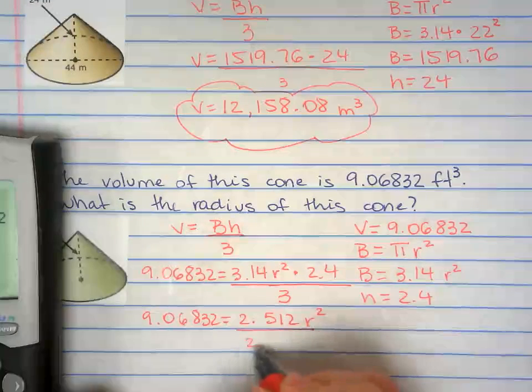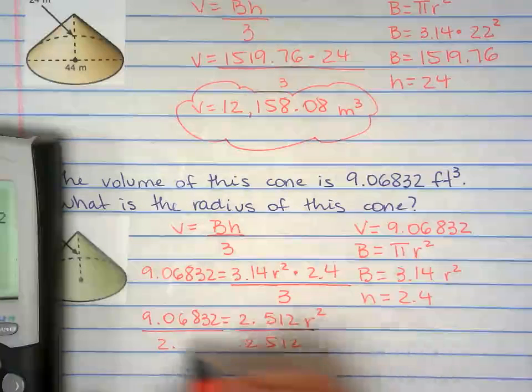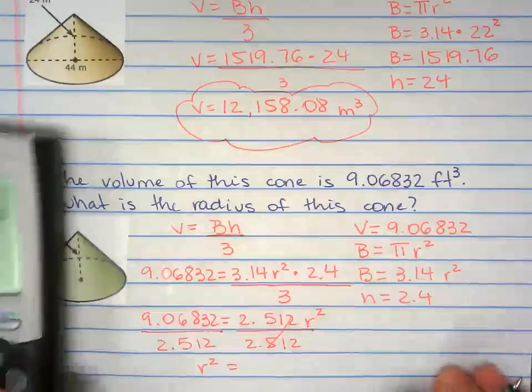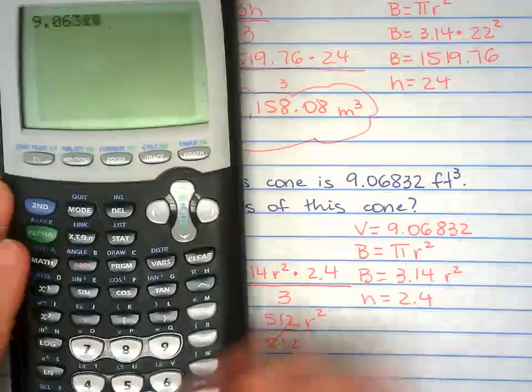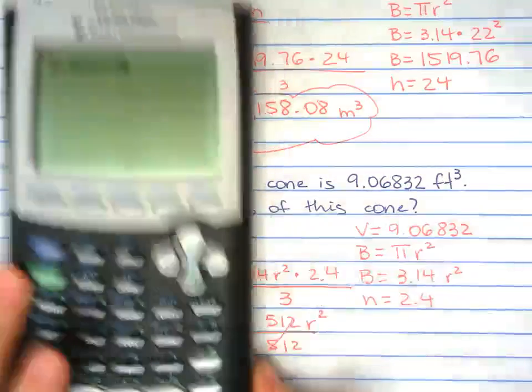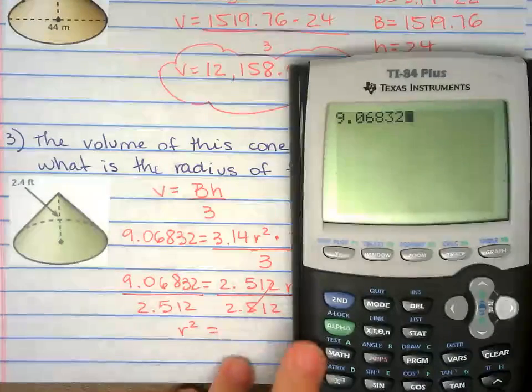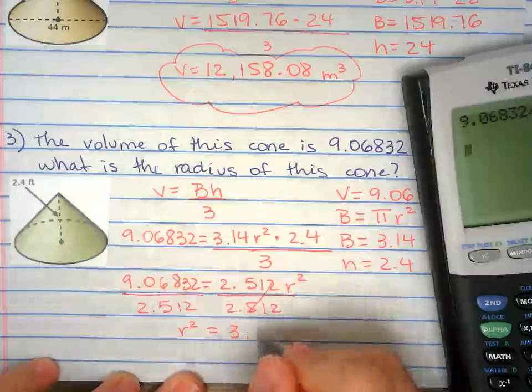So now I have 2.512 r squared. Divide both sides by 2.512 because we're trying to isolate r. 9.06832 divide by 2.512. So 3.61.